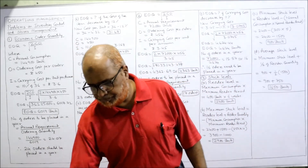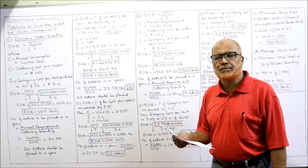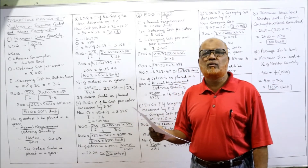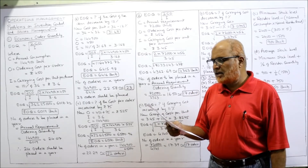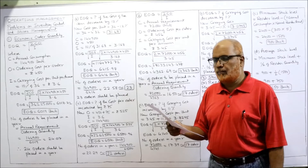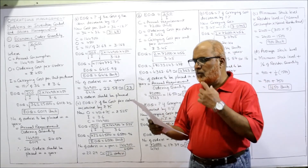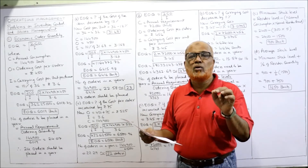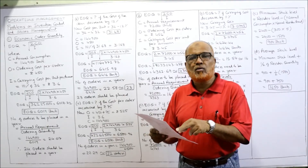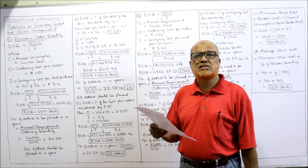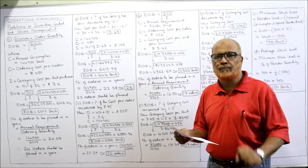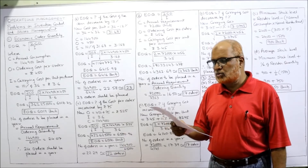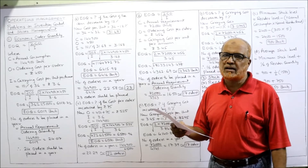Second problem: the annual requirement of a material is 72,000 units (C). The cost of placing an order is Rs. 456 (O). The carrying cost per unit per annum is Rs. 3.45 — directly given as an amount, unlike the previous problem where it was given as a percentage. You are required to find the EOQ and the number of orders to be placed in a year.